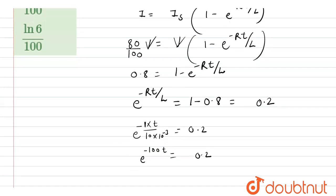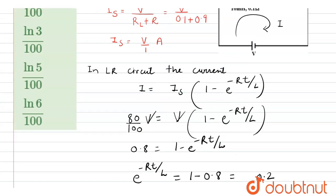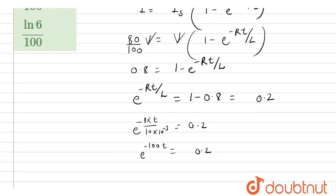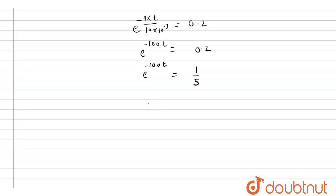Now taking the natural logarithm on both sides. We rewrite e^(-100t) = 0.2 as e^(-100t) = 1/5. After cross multiplication, 5 = e^(100t), so 100T = ln 5. Hence T = ln 5 / 100.